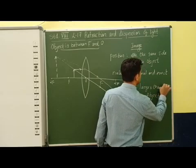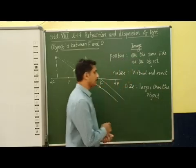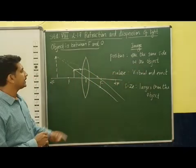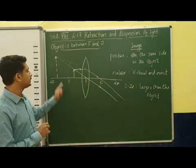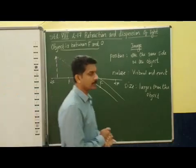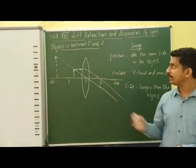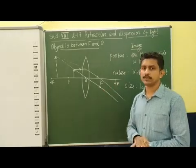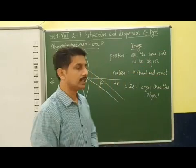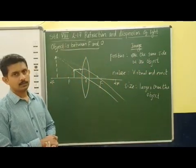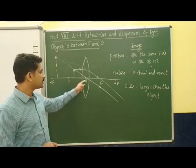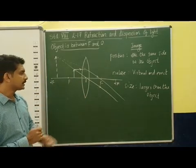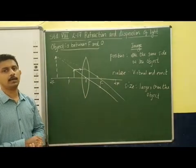So these are the characteristic properties of image formation: the position of the image is on the same side as the object, nature is virtual and erect, and the size is larger than the object. In the case of a convex lens, this is the only case in which the image formed is virtual and erect, and it is an enlarged image.